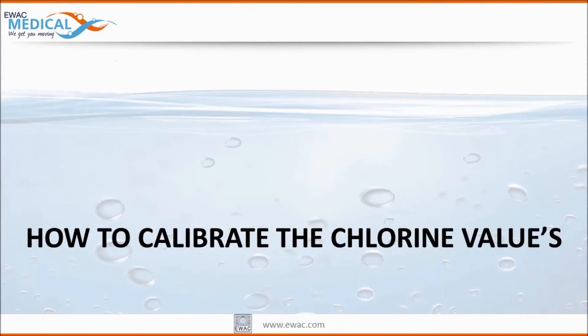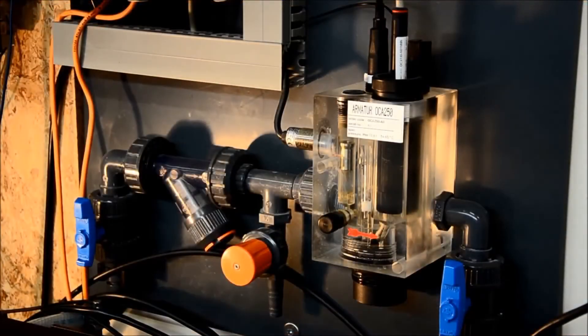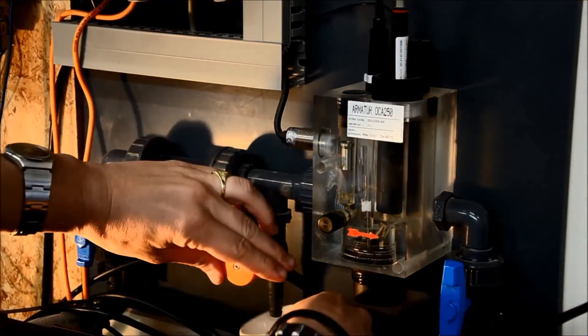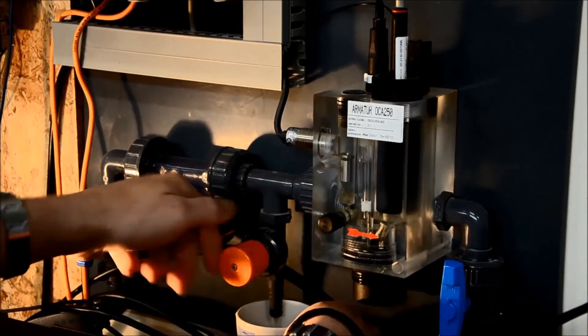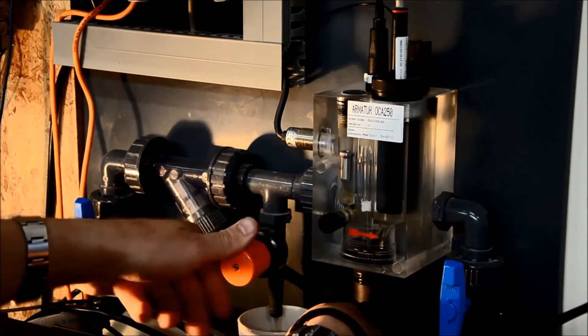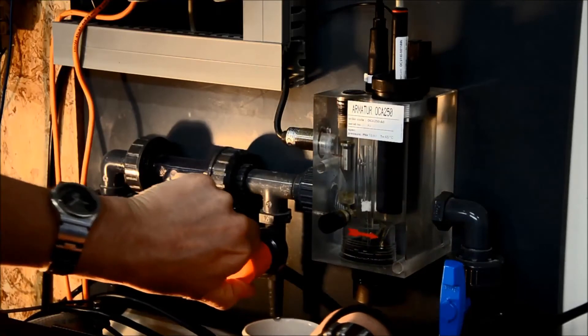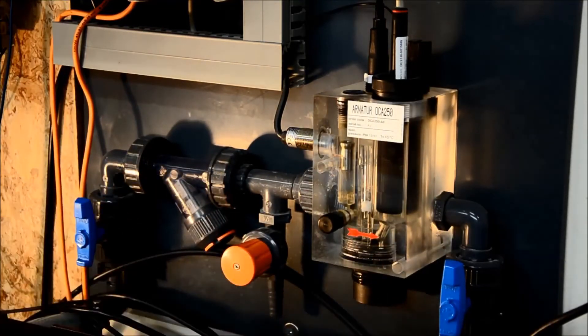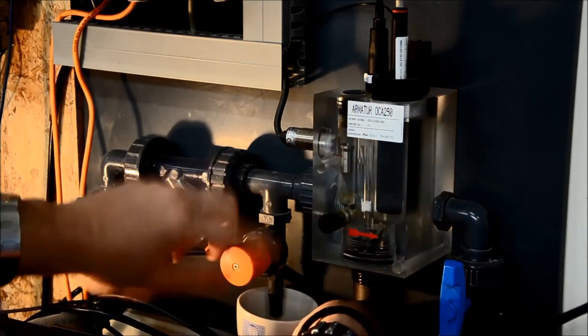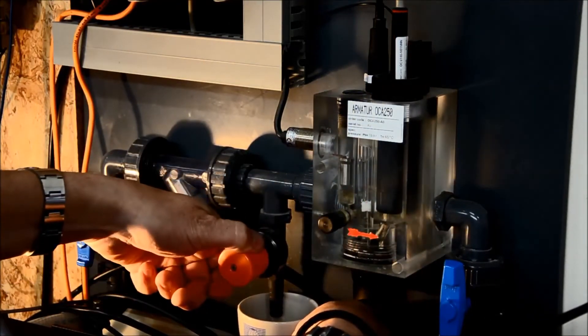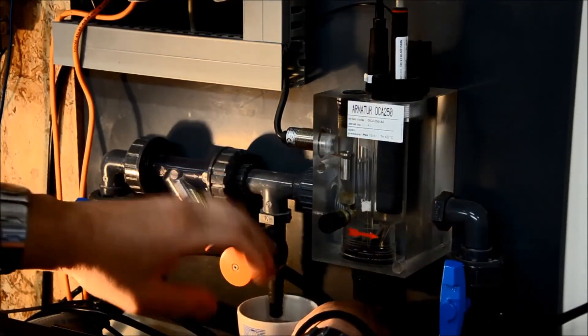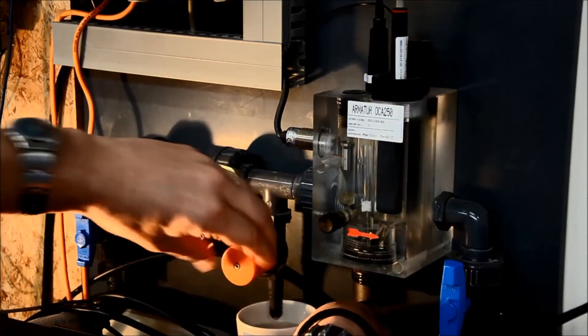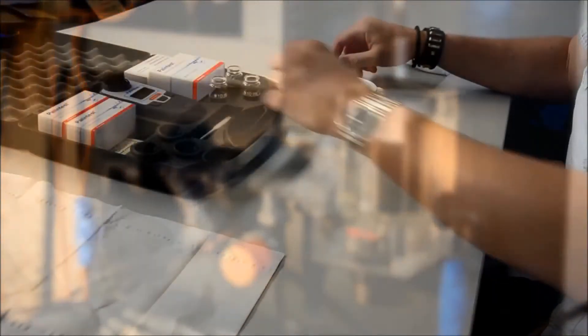How to calibrate the chlorine value? Open the sample tap and pour about a coffee cup of water from the system. Throw this water away. And then pour another coffee cup full of water. With this water we will perform the measurement.